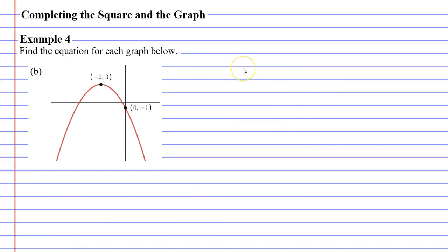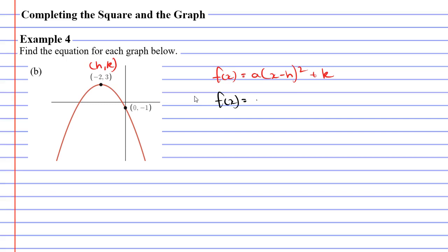Let's now move on to question B. Remembering that our function will be in the form A times (x minus h) squared plus k. We can see that our vertex is the point (-2, 3), so h is negative 2 and k is positive 3. So f(x) equals A times (x minus negative 2) squared — that's the same as x plus 2 — and then plus 3 at the end because k is 3.